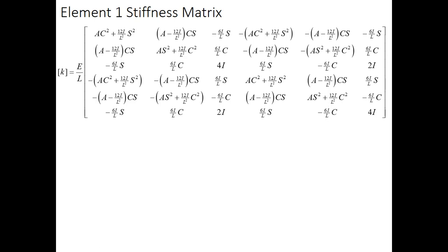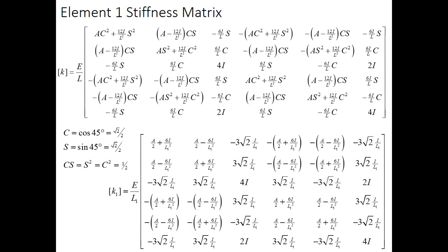To find what the stiffness matrix actually is for element 1, we need to evaluate the sine and cosine. They are 1 over the square root of 2 or √2/2. That means that when I multiply any of those two by each other, I'm just going to get a half. So our simplified matrix is now shown. At least we got rid of the s's and the c's. Still a lot of information in this element 1 stiffness matrix.